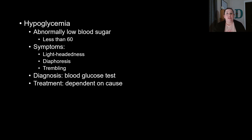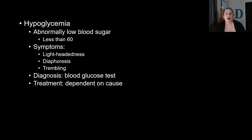Now the opposite — those were examples of hyperglycemia. What about hypoglycemia? Hypoglycemia is an abnormally low blood sugar, where your blood sugars drop below 60. This is dangerous because hypoglycemia causes lightheadedness, diaphoresis, trembling, and can cause the individual to pass out. Diagnosis is a blood glucose test and treatment is dependent on the cause. It could be due to administering too much insulin, or some people can have reactive hypoglycemia where their body overreacts to too many sugars and compensates too greatly.